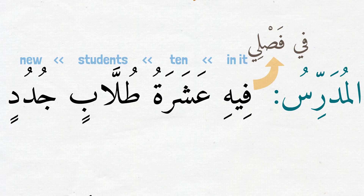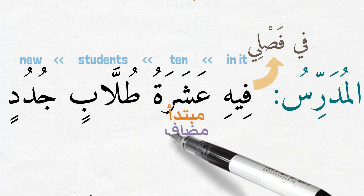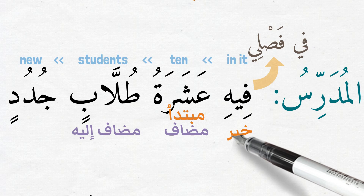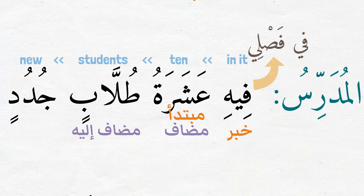This seems to be جملة اسمية. Can you find the مبتدى and خبر? The مبتدى is عشرة — it is مبتدى مؤخر — and it is مضاف, while طلاب is مضاف إليه. Its خبر مقدم is جار مجرور فيه. Because it is جار مجرور, we classify it to be خبر شبه جملة, a phrasal خبر.